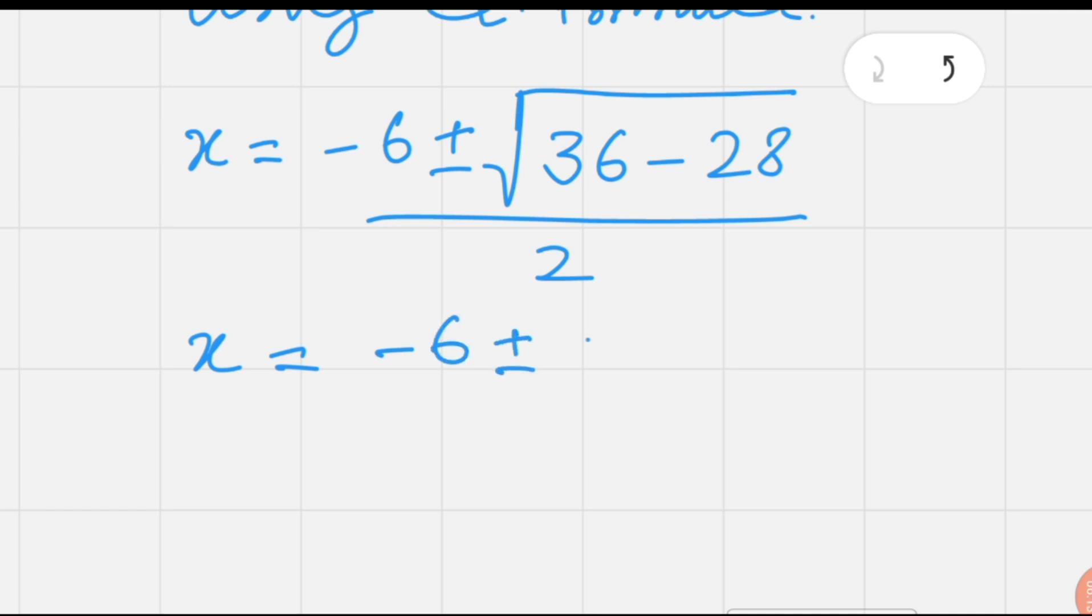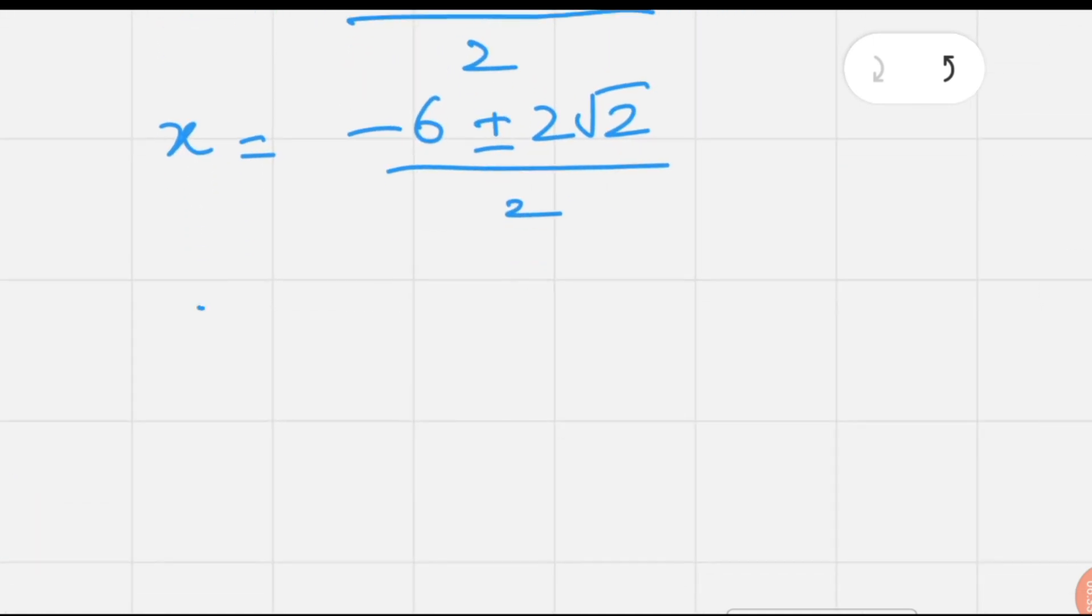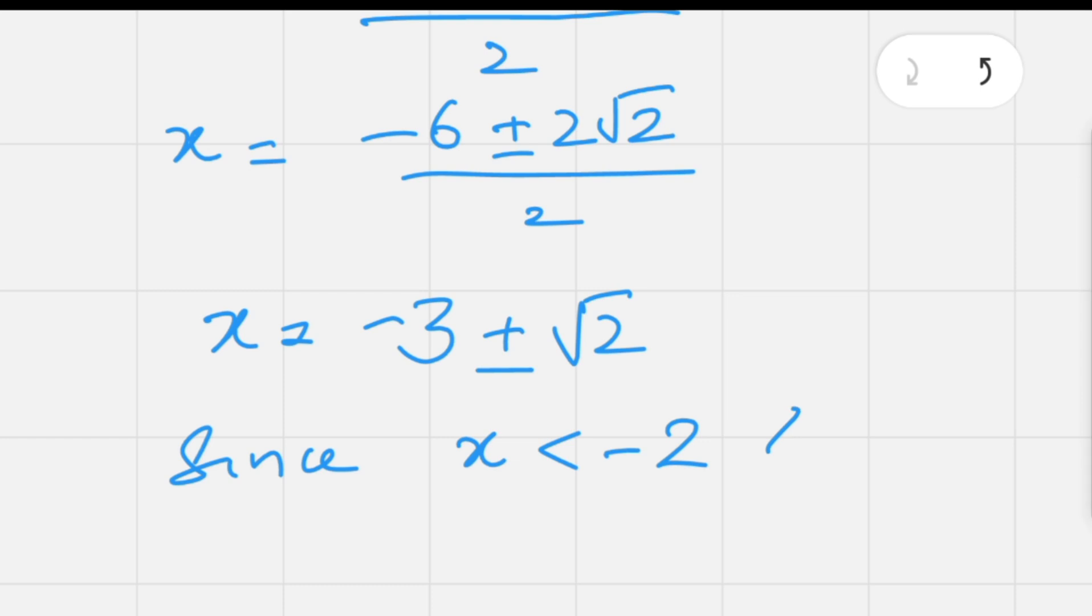Simplifying this value, √8 is 2√2, so we have (-6 ± 2√2) / 2. Taking 2 common and canceling with the denominator, we get x = -3 ± √2.